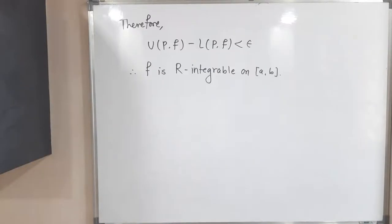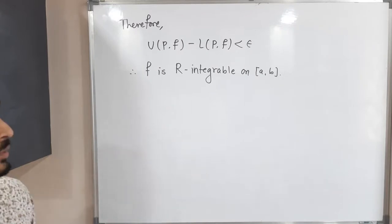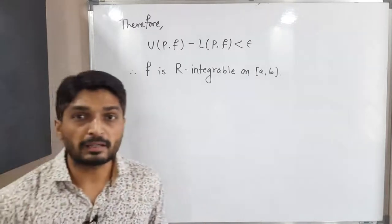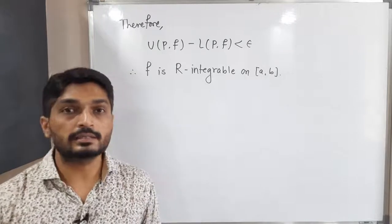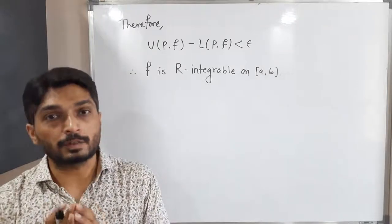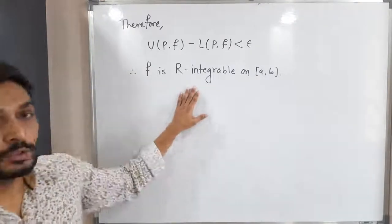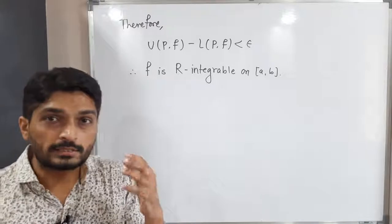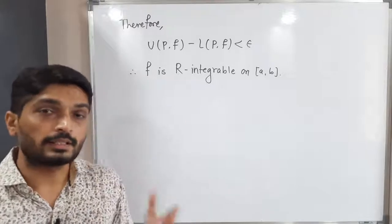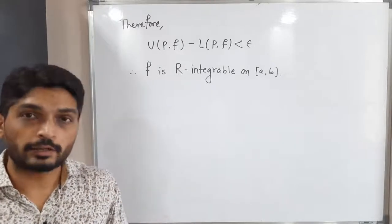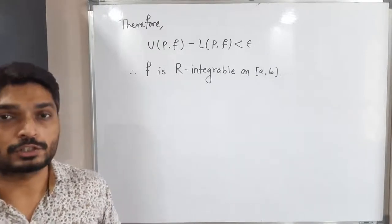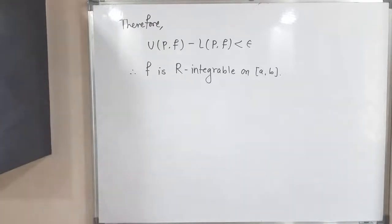So we have U(P,f) − L(P,f) < ε. Therefore, by the Riemann criterion, the function is Riemann integrable on [a, b]. Finally, our result is: every continuous function is Riemann integrable.